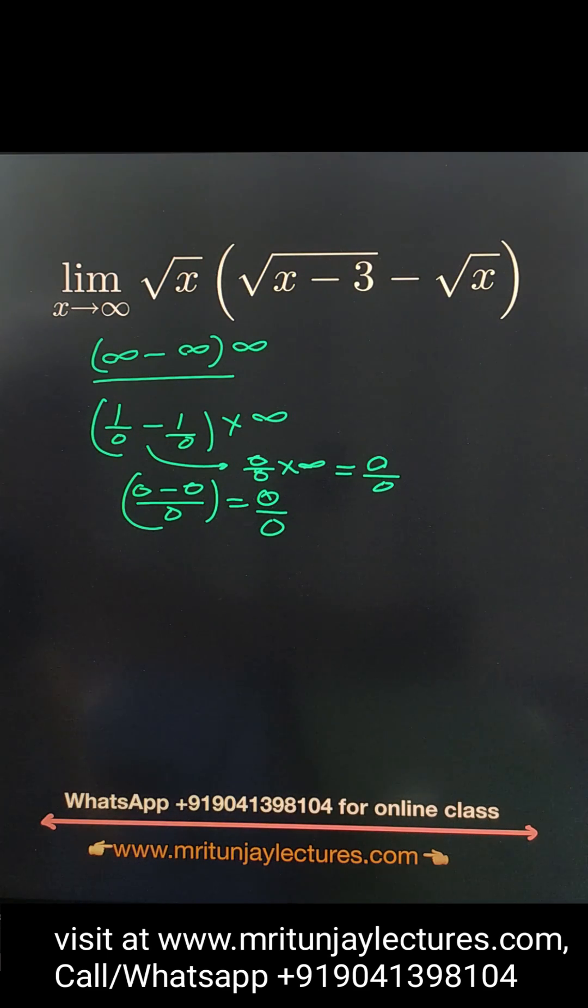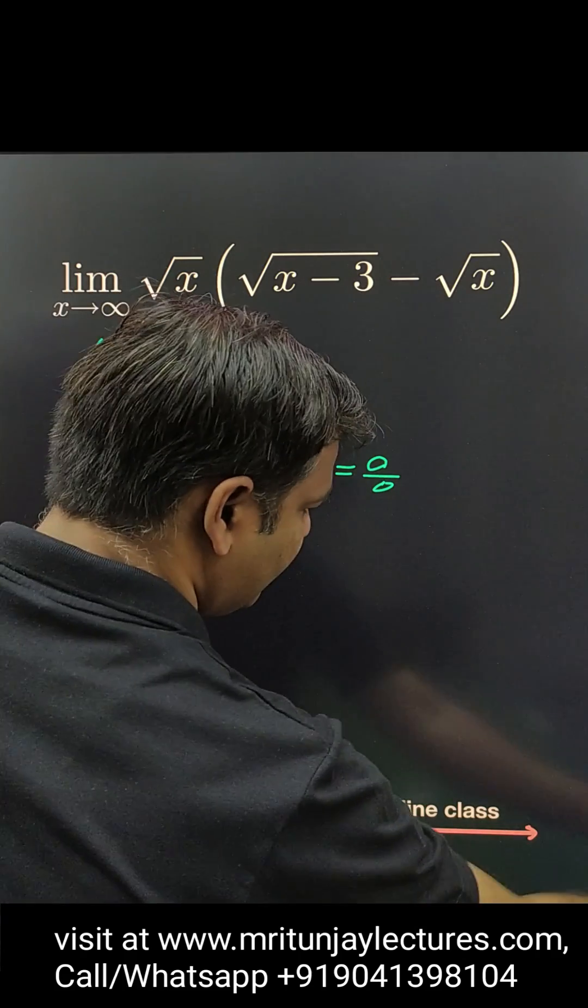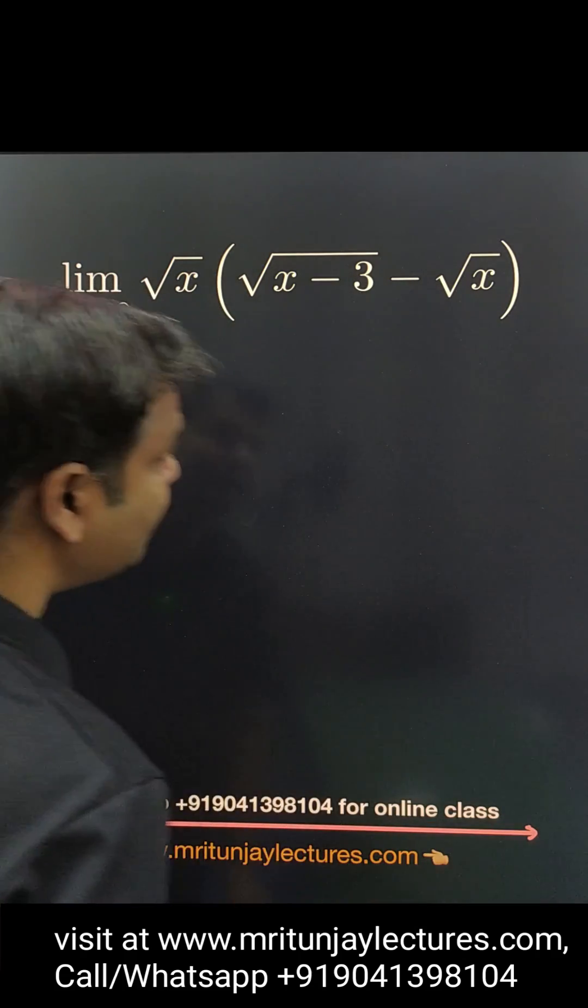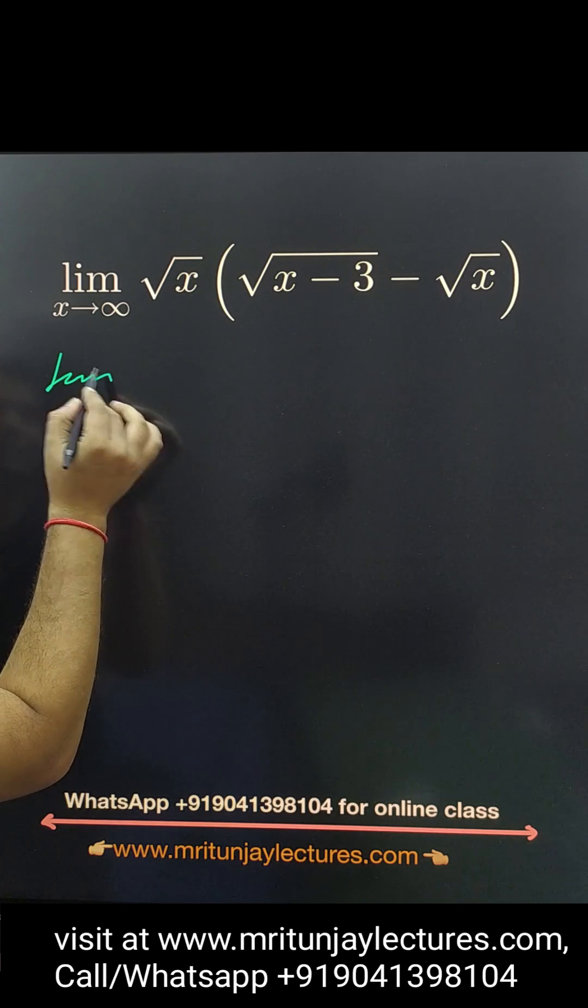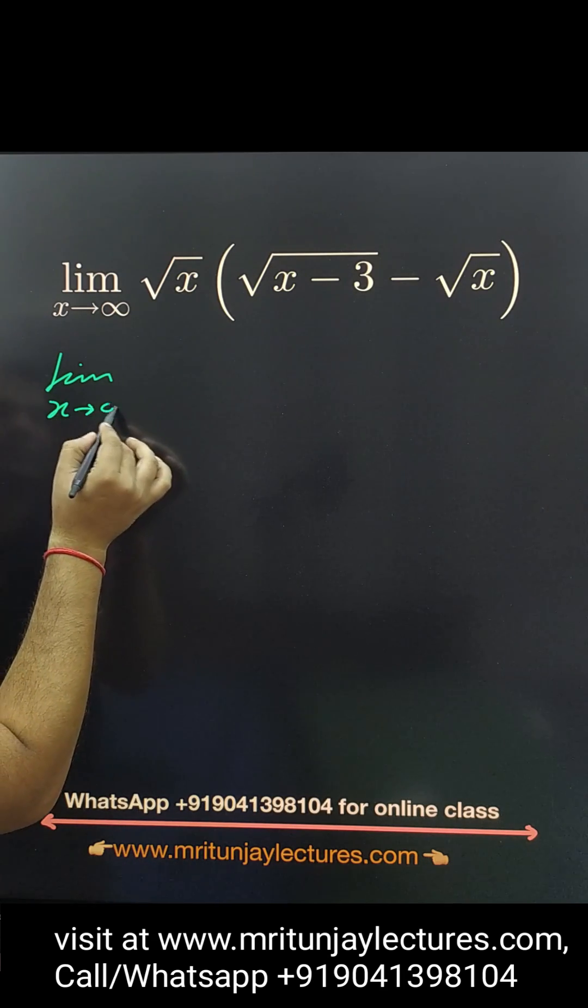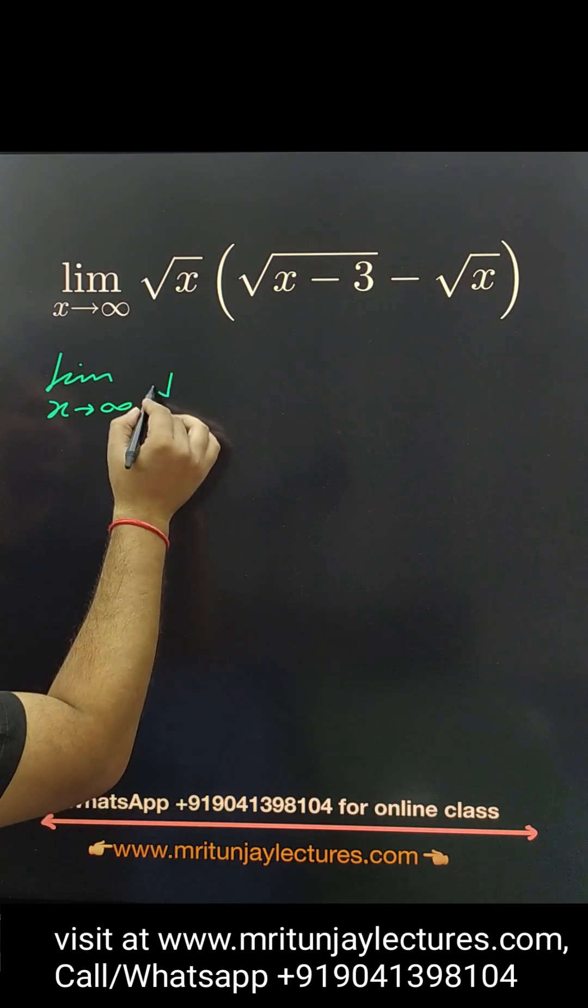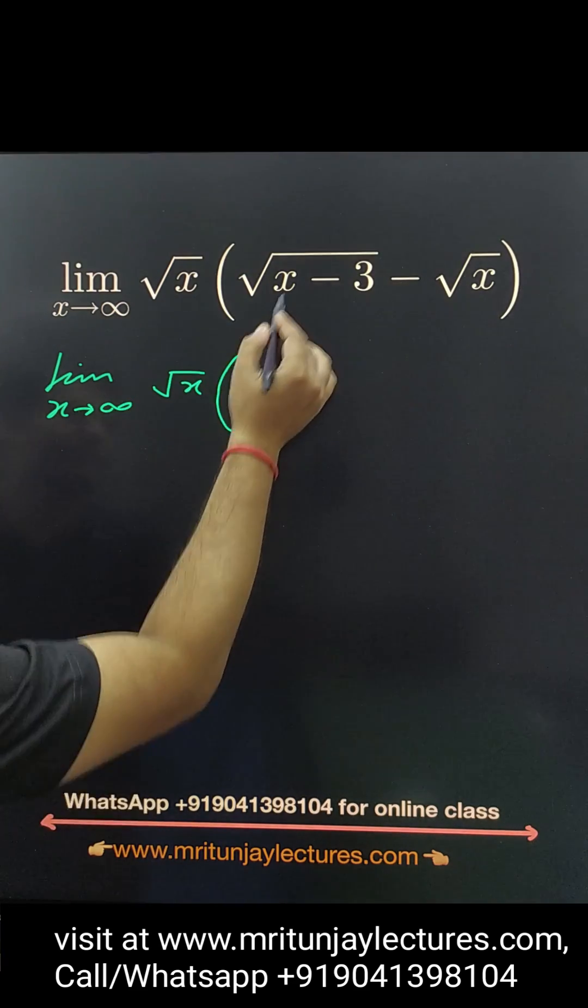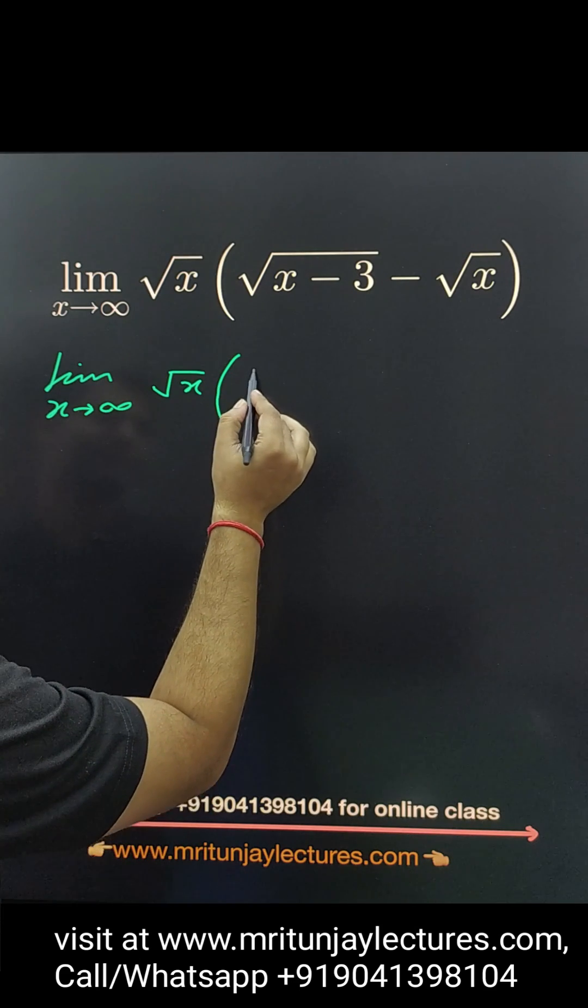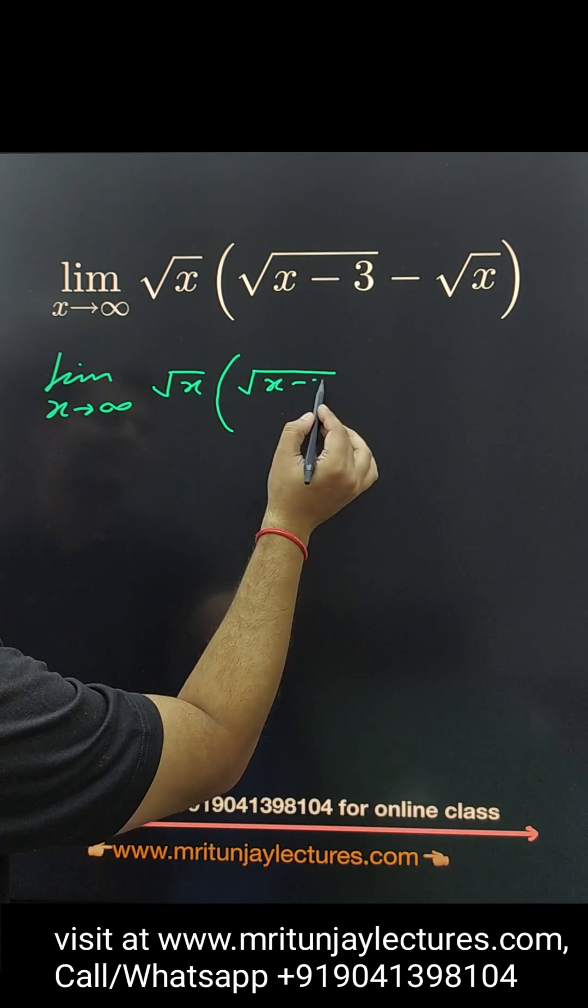So it means that is indeterminate form. It means how can we solve this type of problem? First of all, make that one here x tends to infinity. So you can write right now here root x. The conjugate of that one is basically rationalize.